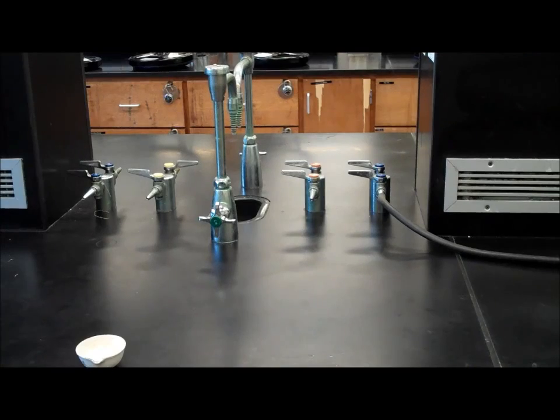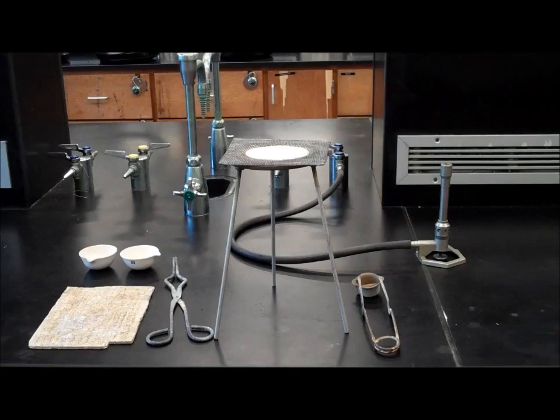After thoroughly cleaning your two crucibles using distilled water and a wire brush, you want to dry them using a Bunsen burner and a tripod stand.